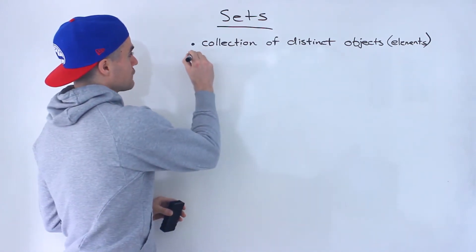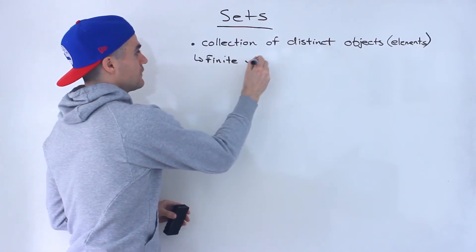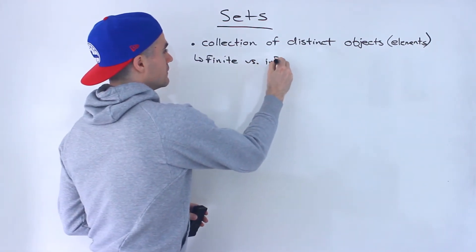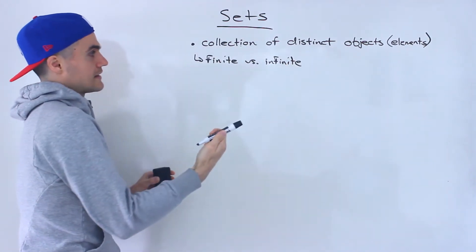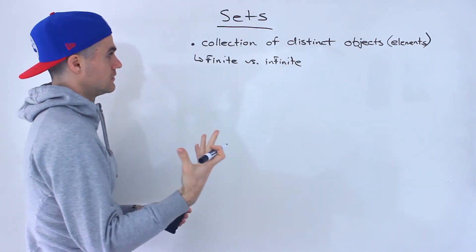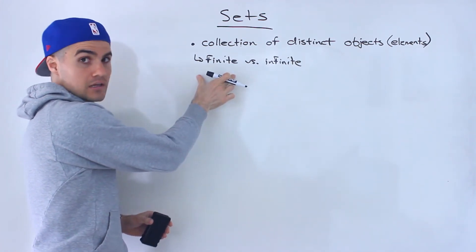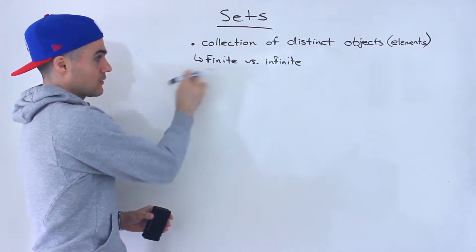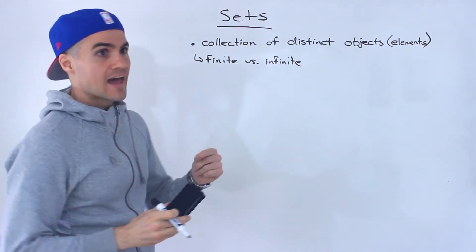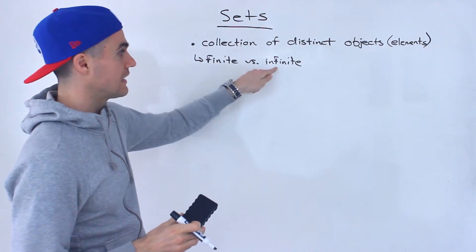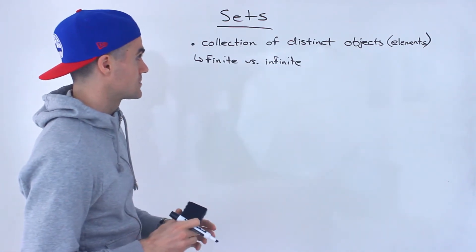There are different kinds of sets — you can have finite sets or infinite sets. For example, the set of integers from 1 to 10 would be a finite set with only 10 elements, versus the set of all integers, which would be an infinite set since there's an infinite amount of integers.